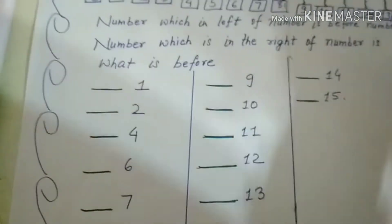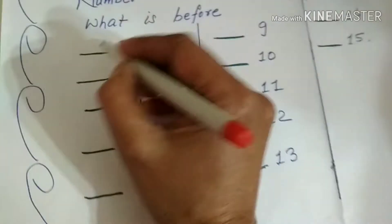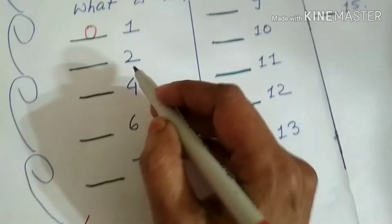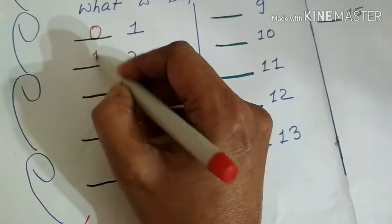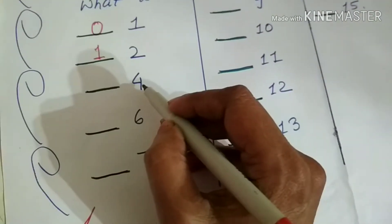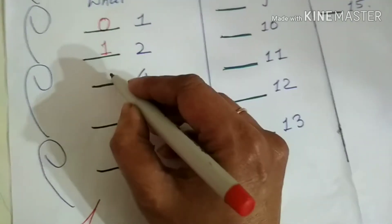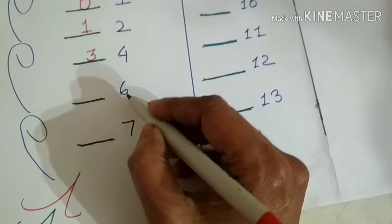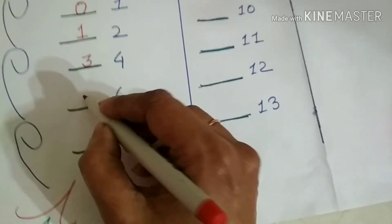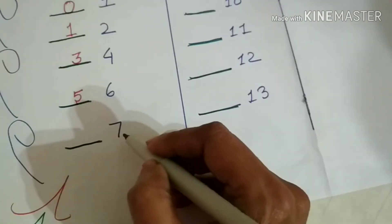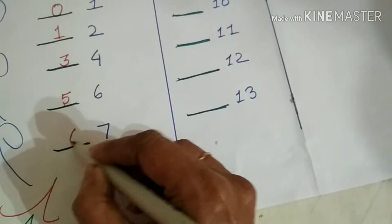What is before 1? 0. What is before 2? 1. So also, what is before 4? 3. What is before 6? 5. What is before 7? 6.